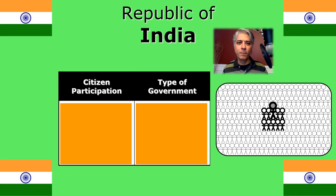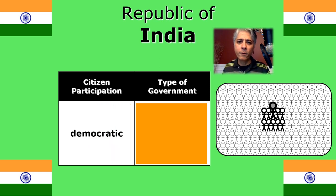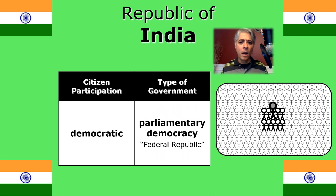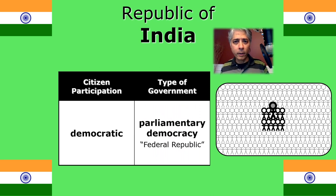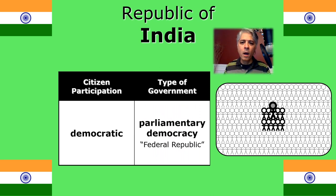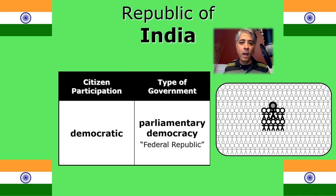Next up is the Republic of India. India is of course democratic — they have a parliamentary system of government. They call themselves a federal republic, which is accurate, but more accurately we can describe them as a parliamentary democracy.